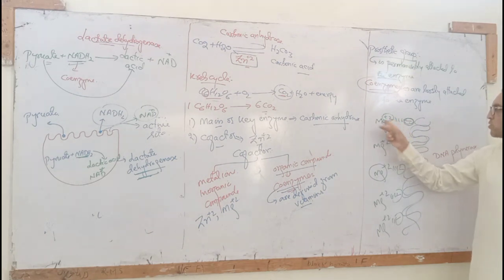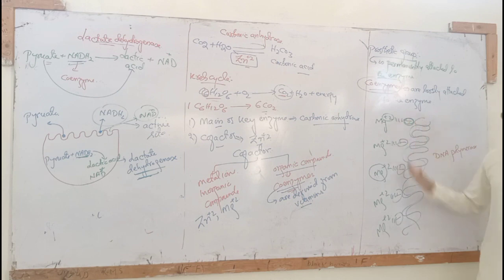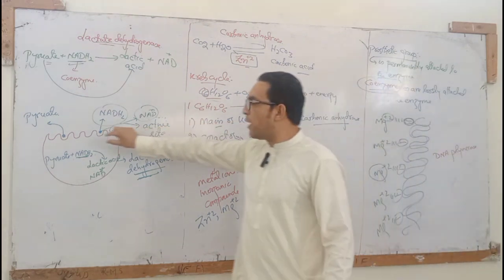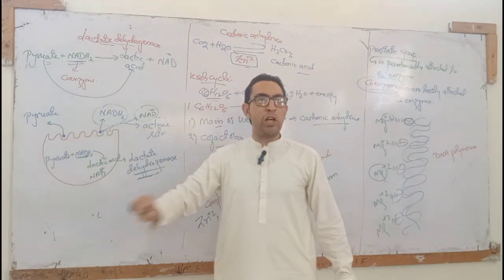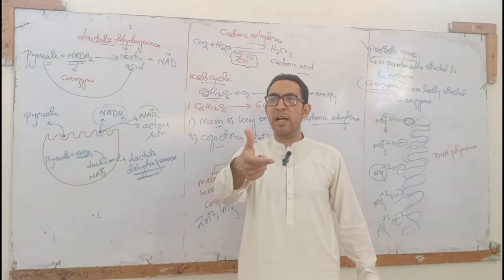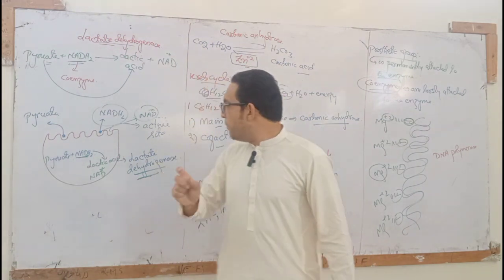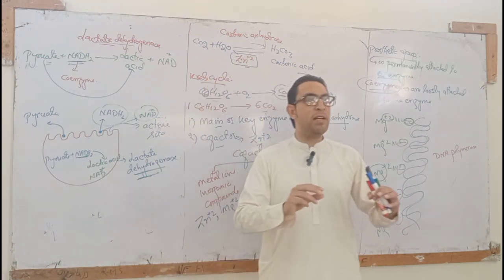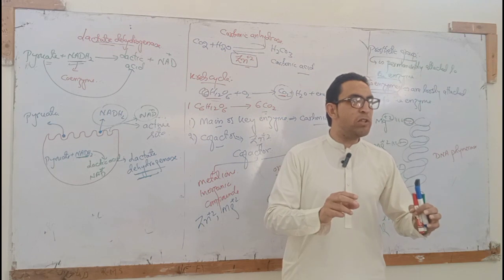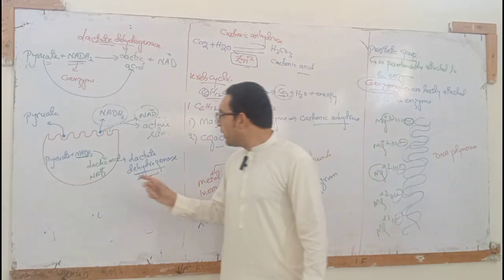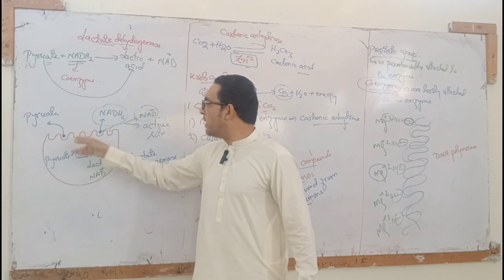Mg²⁺ will be permanently attached because it stabilizes the negative charge. This is a prosthetic group — it is permanently attached. Coenzymes, on the other hand, are derived from vitamins. NAD (nicotinamide adenine dinucleotide) is a coenzyme derived from a vitamin.